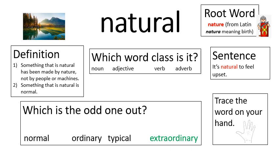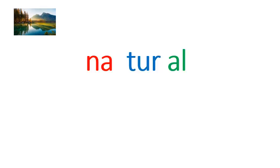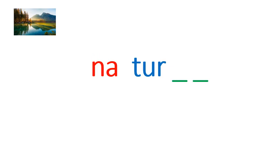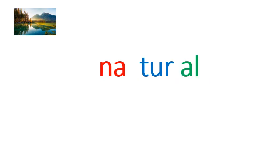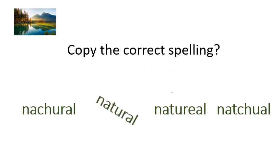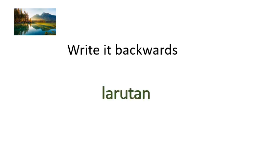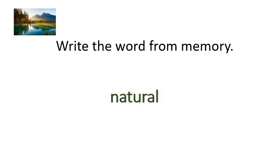I've split this word into three chunks: na-tur-al. First part, N-A. The tricky middle section: T-U-R, coming from the suffix T-U-R-E but we've dropped the E because we're adding A-L to the end. End part: A-L. Na-tur-al. Copy the correct spelling, then finish the word — I've given you the tricky middle part to add. N-A-T-U-R-A-L: natural. Write it backwards: larutan. And finally, write the word from memory. N-A-T-U-R-A-L. Very well done.